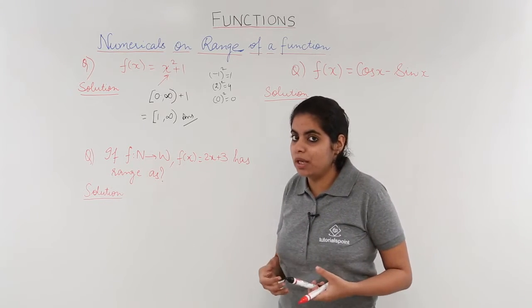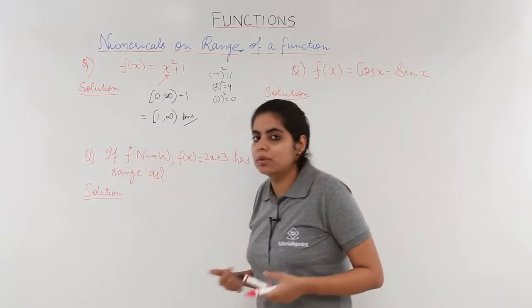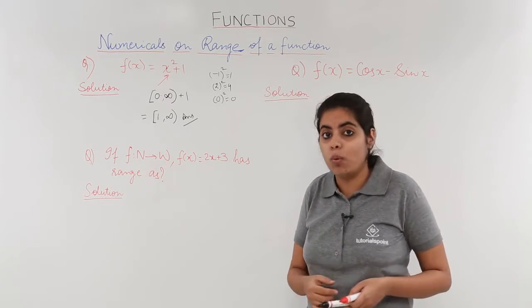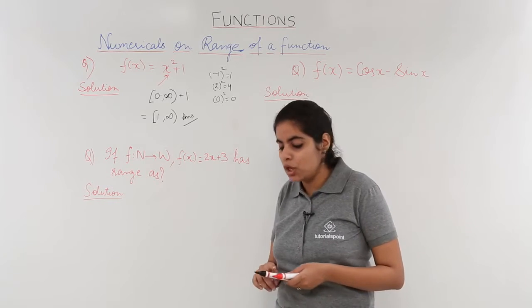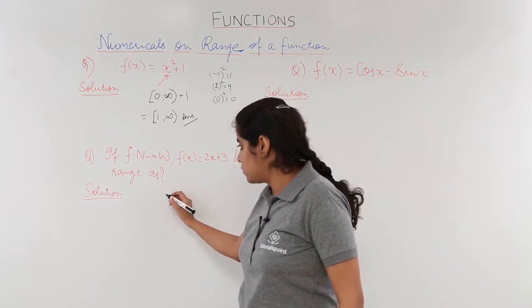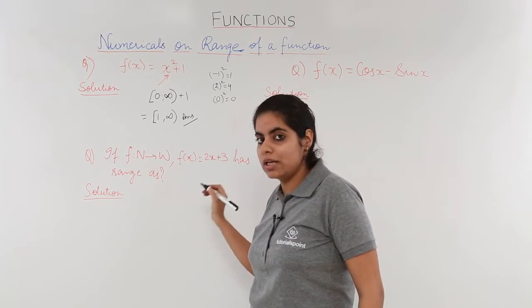And x is domain. Domain is a natural number. Natural number starts from 1, 2, 3 and so on. So the values of x would start from 1, 2, 3 and so on.